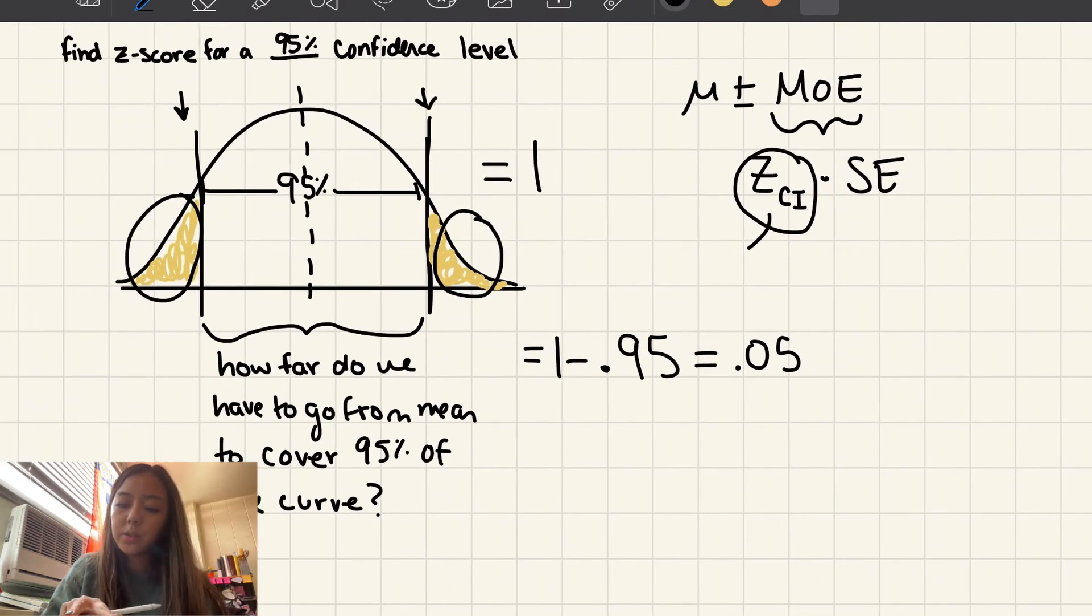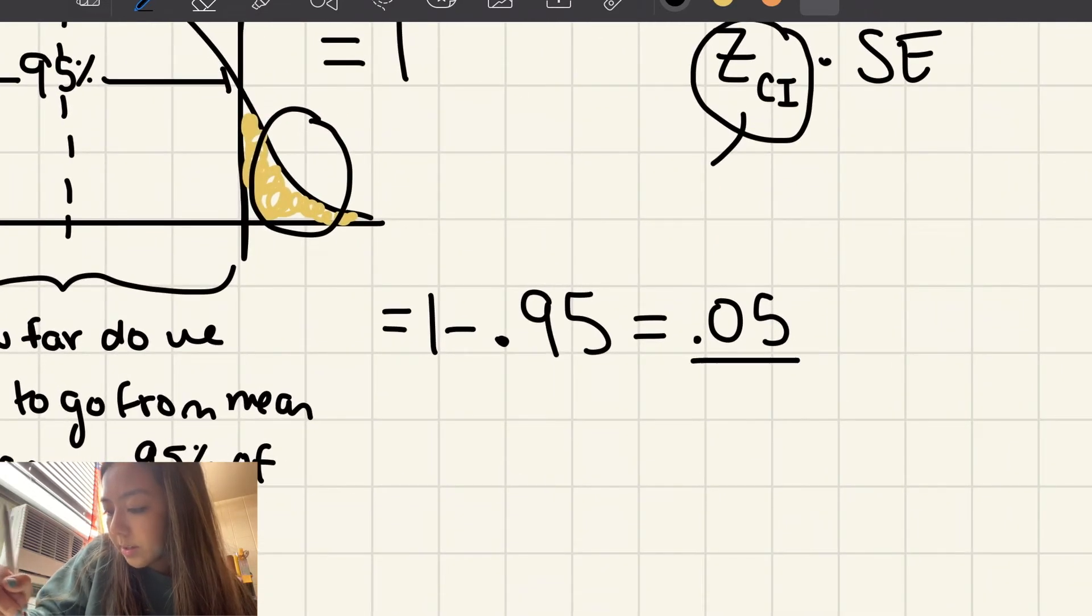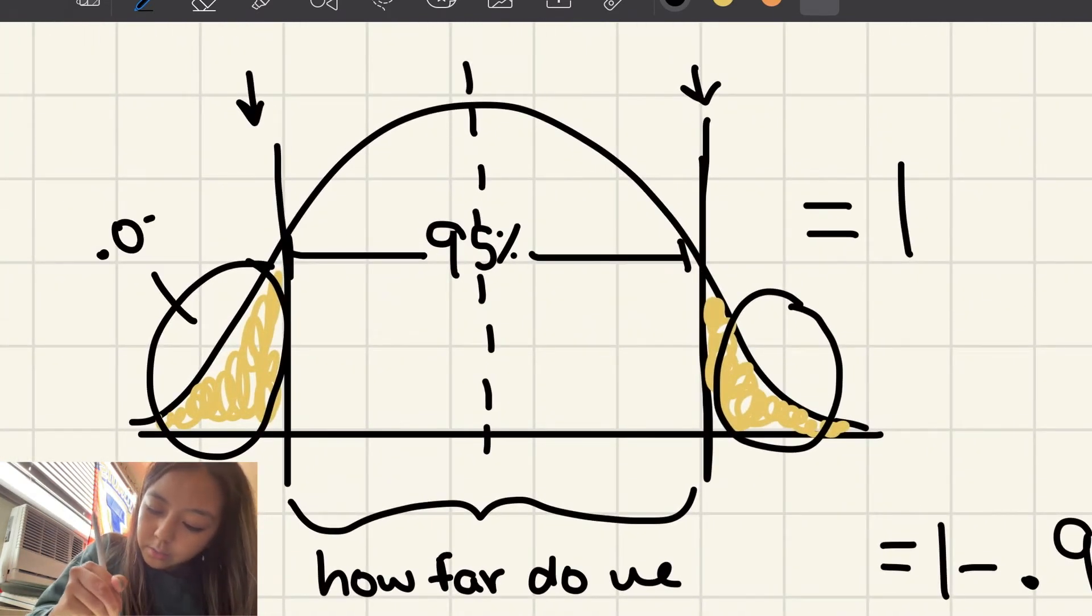So that's going to be the sum of the two tails, the sum of the area of the two tails. But to find the individual area of the tail, you're going to divide this by 2, and you're going to get 0.025. So the area of each tail is 0.025.